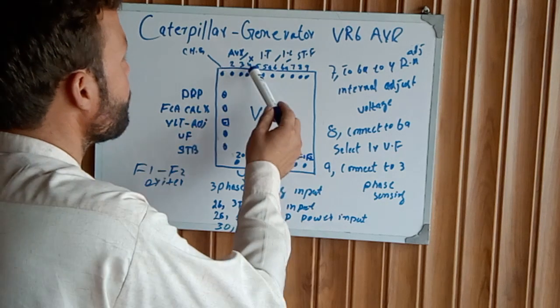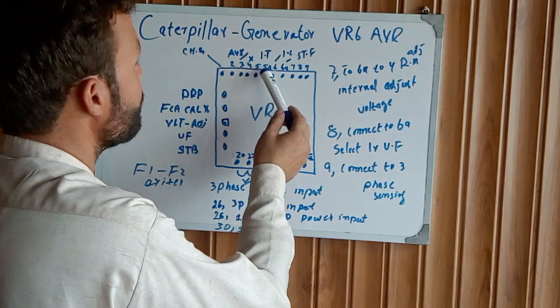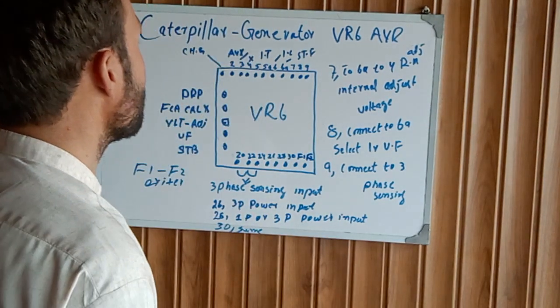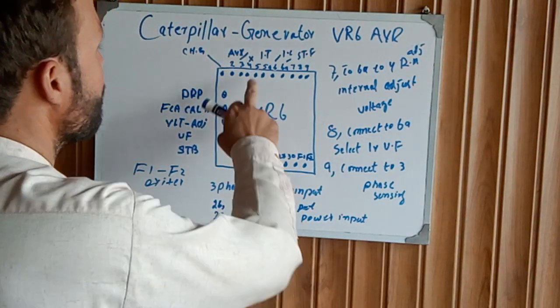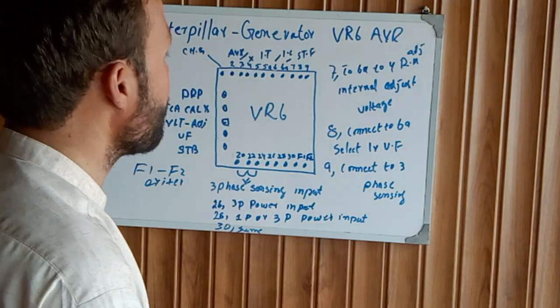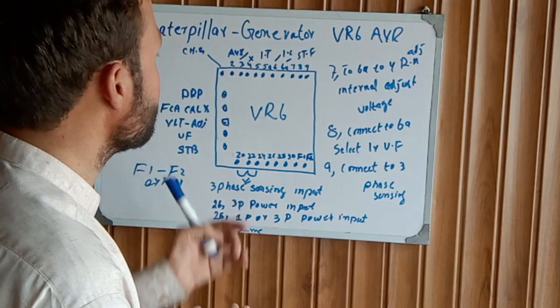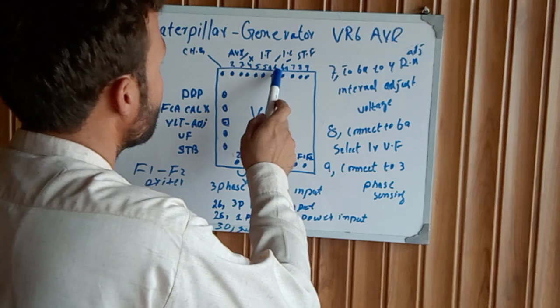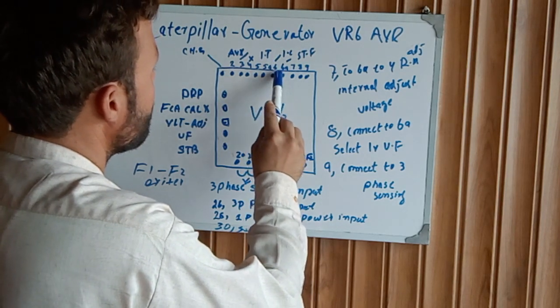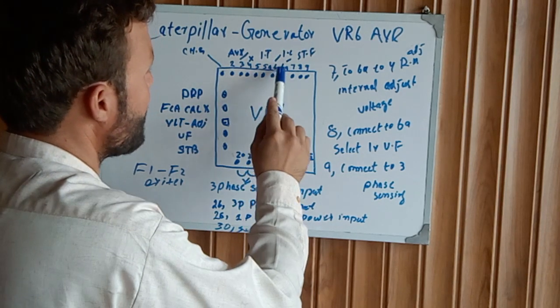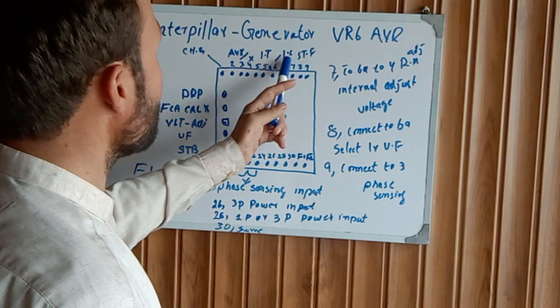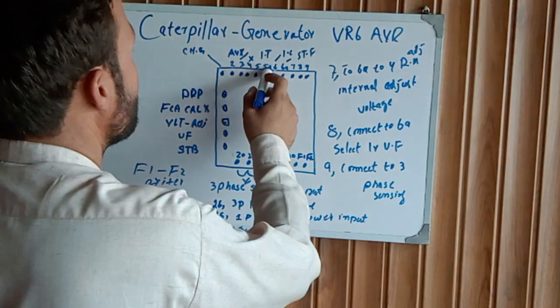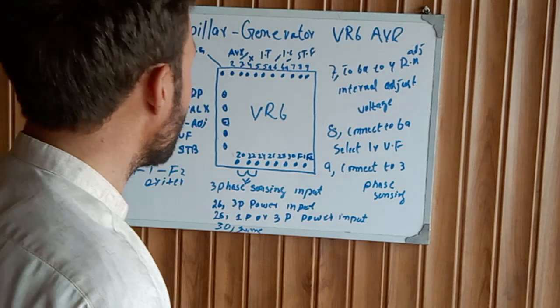After that, 5 and 5A. This is the supply for the current transformer. This alternator has current transformer to operate the AVR system. And 6A, this is for the current CT. One is current transformer and one is current CT 6A.